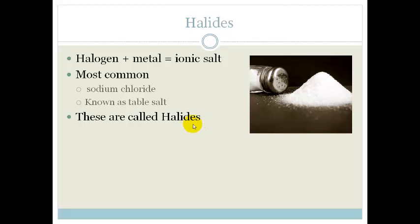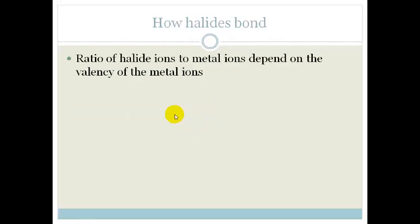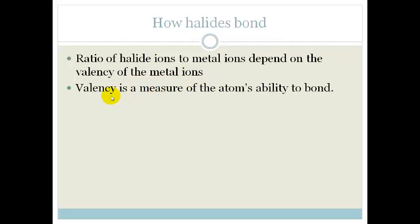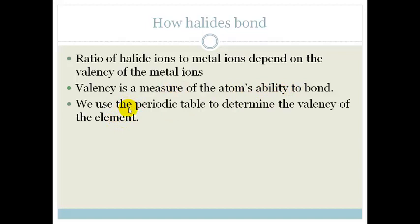Now what we need to know is how do Halides bond. The ratio of the Halide ions to the Metal ions depends on the valency of the Metal ions. Now valency is a measure of the atom's ability to bond. Remember that valence electrons are the number of electrons in your outer energy shell, whereas valency is a measure of the atom's ability to bond. We use the periodic table to determine the valency of the elements.